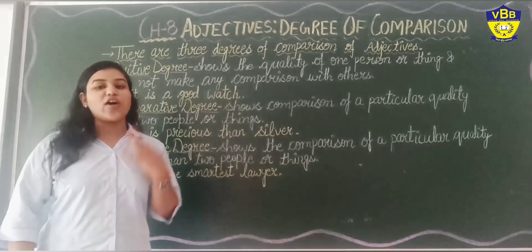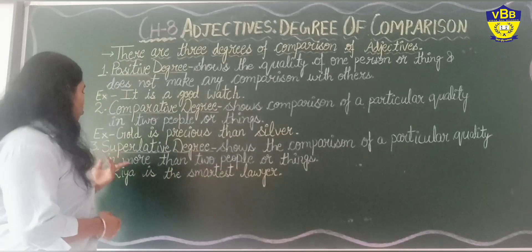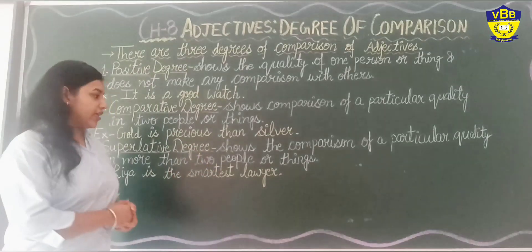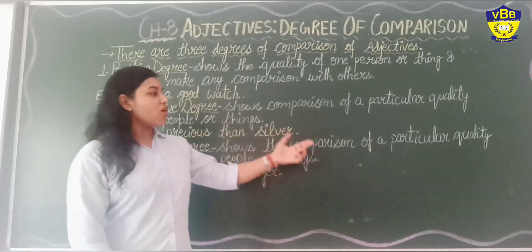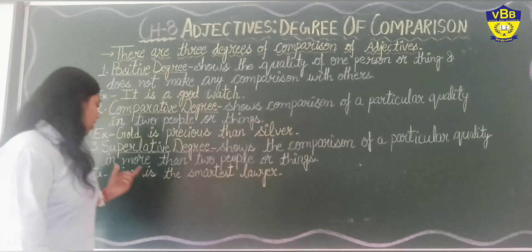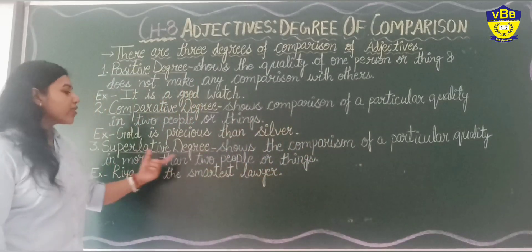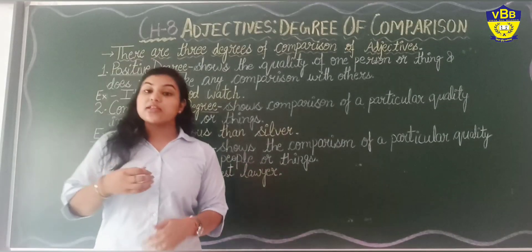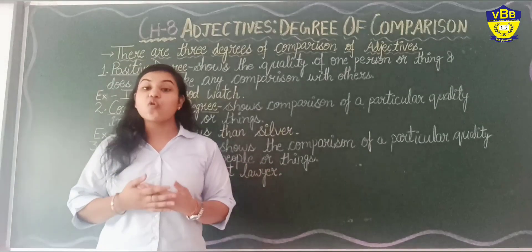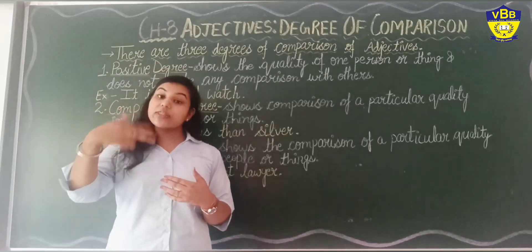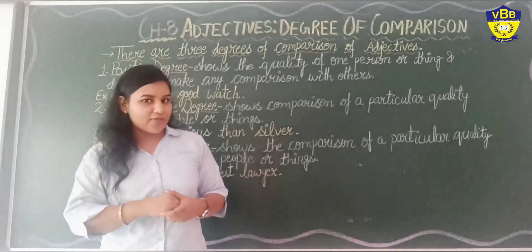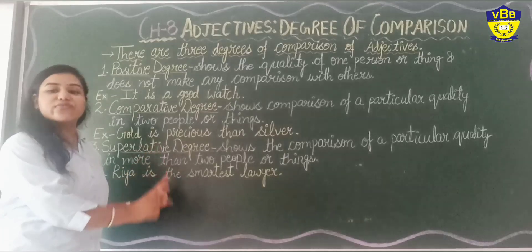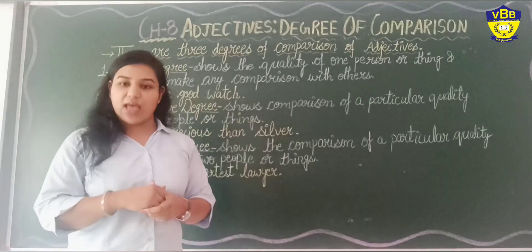Now it is time for our third degree, that is Superlative Degree. Superlative Degree shows the comparison of a particular quality in more than two people or things. When we need to show comparison between more than two things, we have to use Superlative Degree.